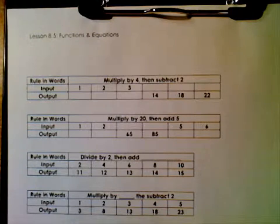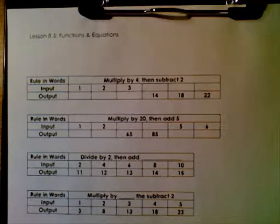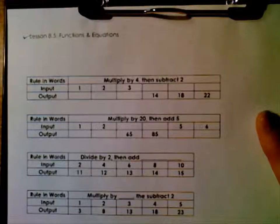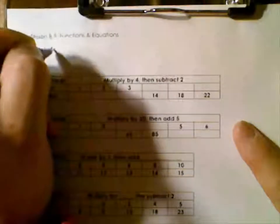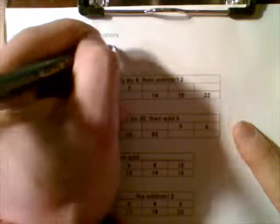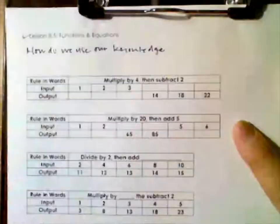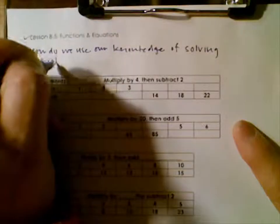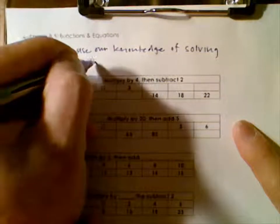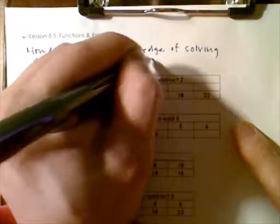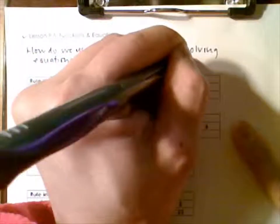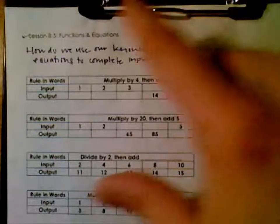Hey fifth graders, we're going a little old school today. We have a bunch of what we call input/output tables. I didn't want you to have to draw those all through your notebook, so you're going to get a copy of this and then staple or tape it to your math notebook. Today is lesson 8.5 and our question is: how do we use our knowledge of solving equations to complete input and output tables?